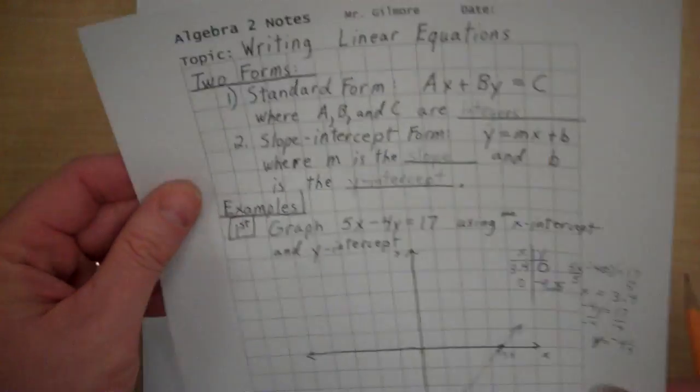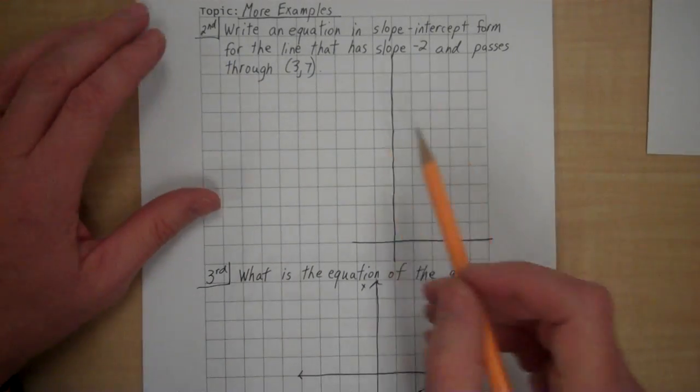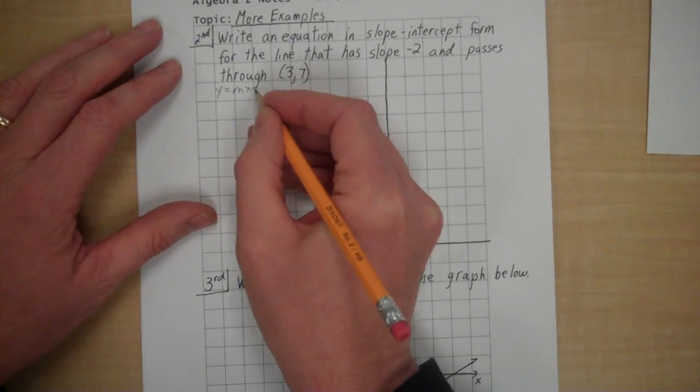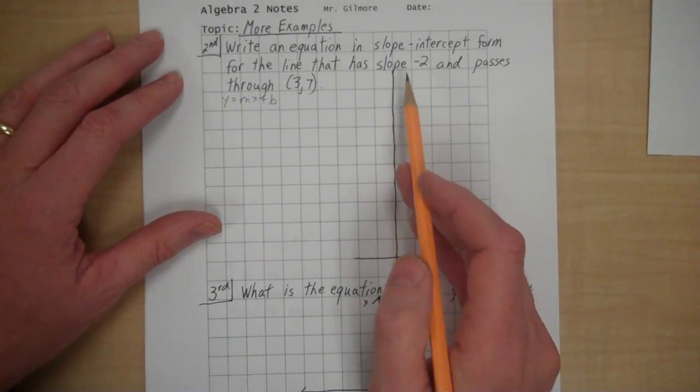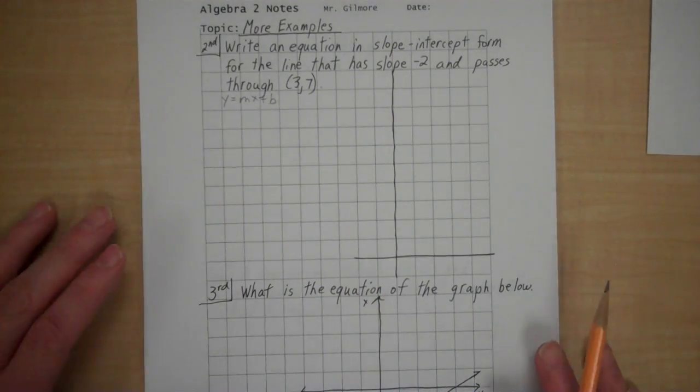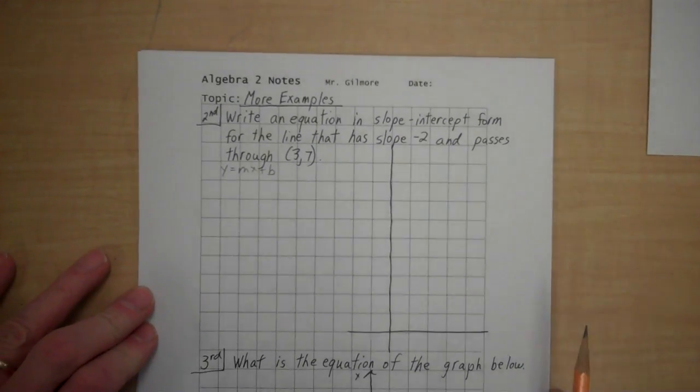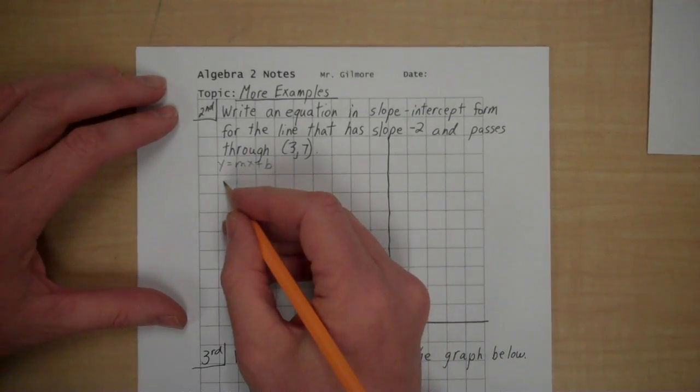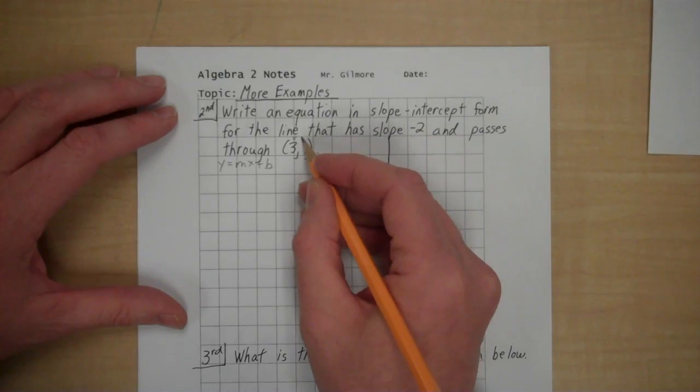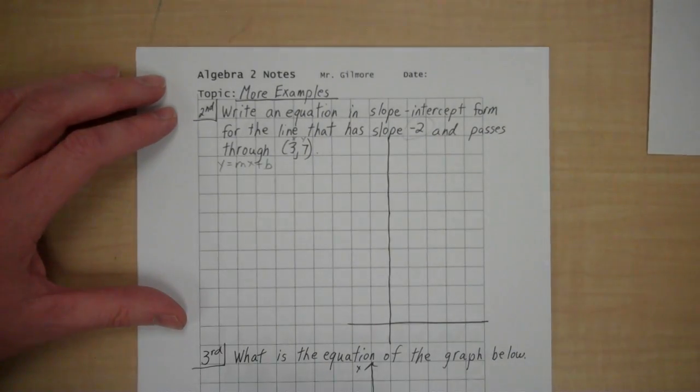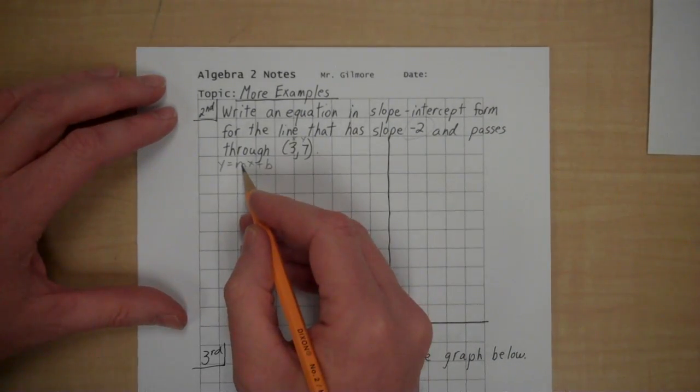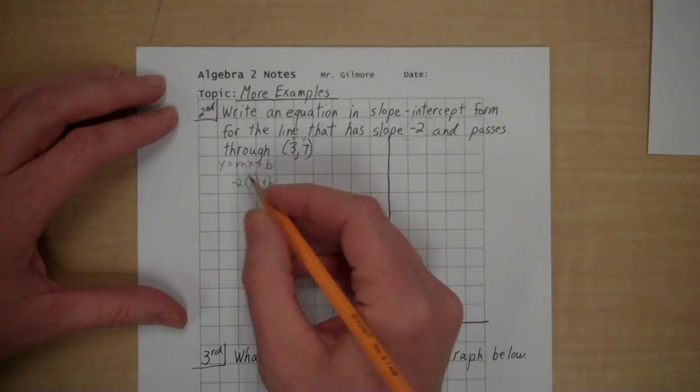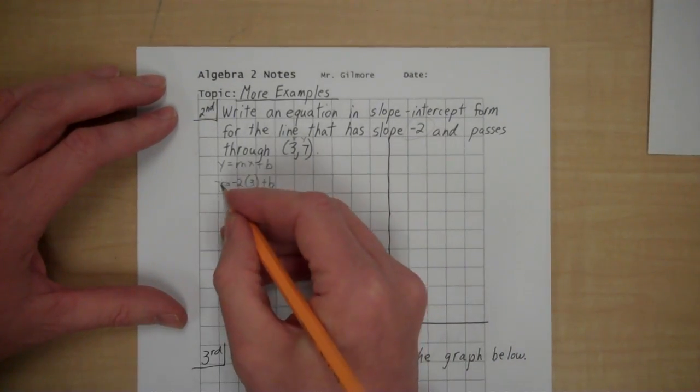The next example, we've got some more examples. Write an equation in slope-intercept form, that's y equals mx plus b, for the line that has slope negative 2 and passes through (3, 7). Okay. Well, this is an x value. This is a y value. And this is the slope value. That is the m. I'm going to put the m right there. The x value I have is 3. The b value I don't have, and we're going to solve for it. And the y value is 7.